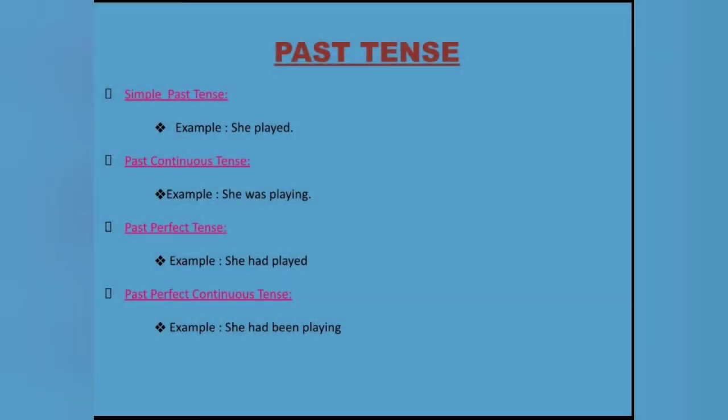Past tense. Simple past tense: she played. Past continuous tense: she was playing. Past perfect tense: she had played. Past perfect continuous tense: she had been playing.